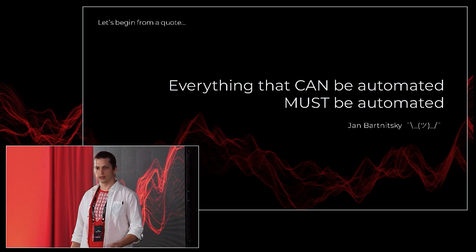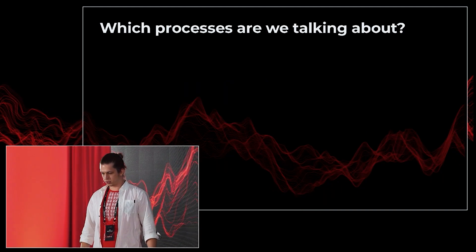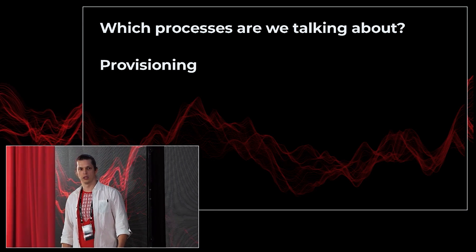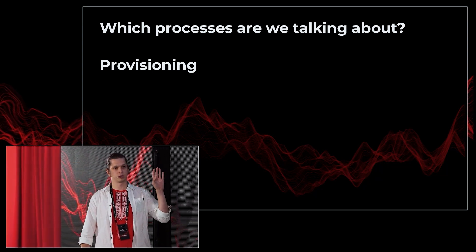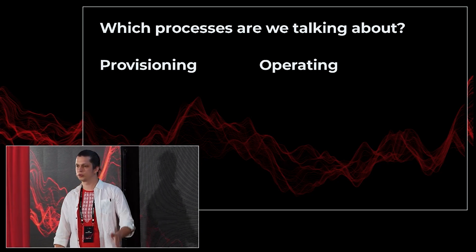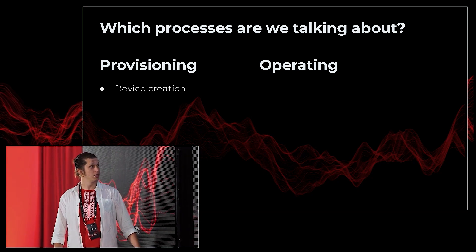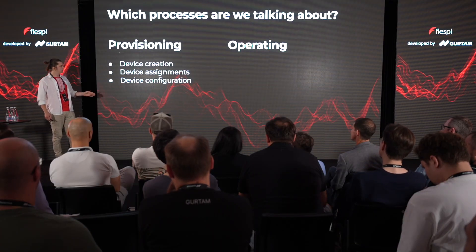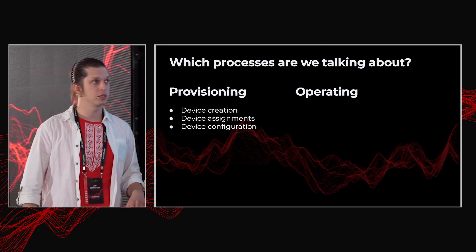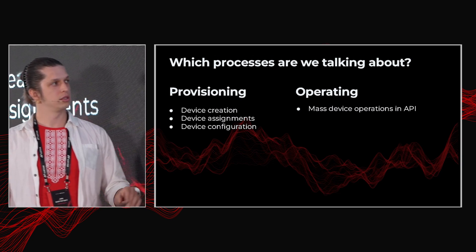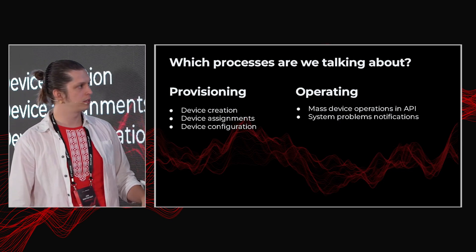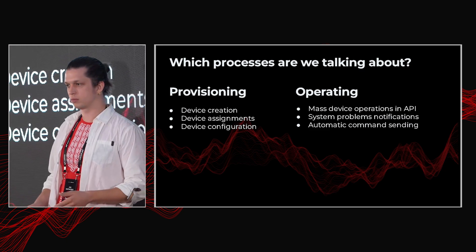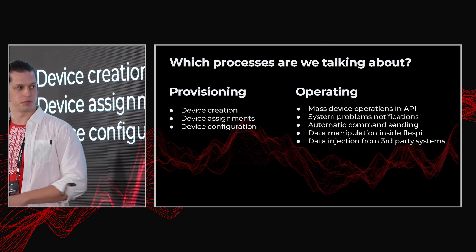Which processes are we talking about today? I've split them into two groups. The first group is initial provisioning processes — for example, something that happens when you start working. The second group is operating: ongoing processes when you have a huge load. For provisioning, we have device creation, assignments for plugins, streams, and device configuration. For operating, we have massive operations with large numbers of devices, notifications about problems, automatic command sending on conditions, data manipulation inside Flespy, and data injection from third-party systems.